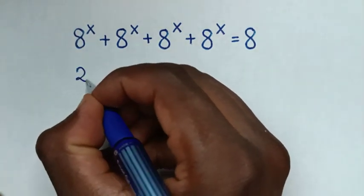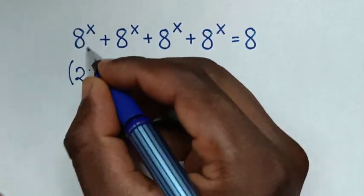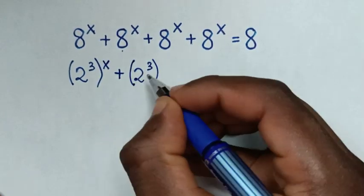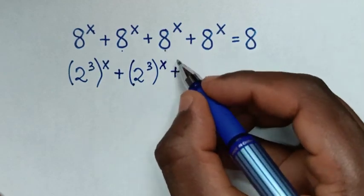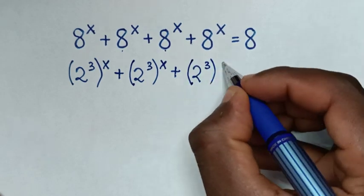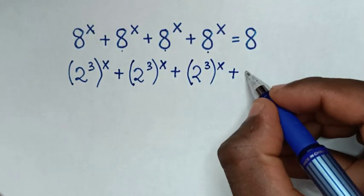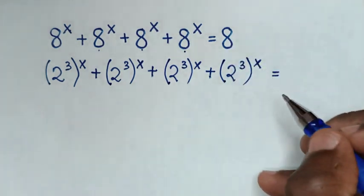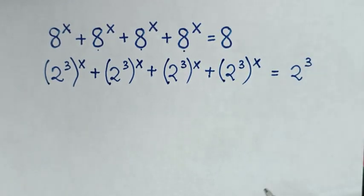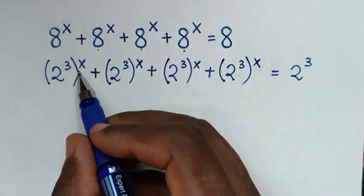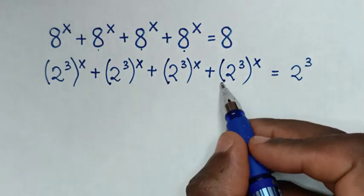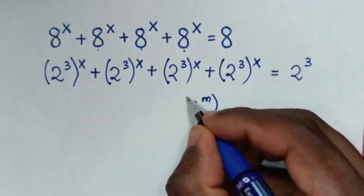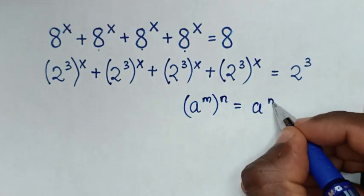Now, 8 is the same as 2 power 3, so each term (2 power 3) bracket power x appears four times. We will apply the exponential rule which is in the form of a power m bracket power n is equal to a power of m times n.